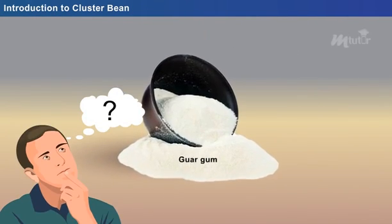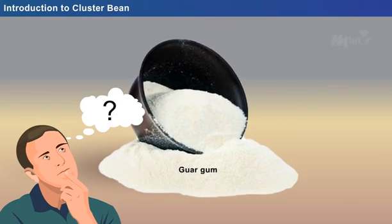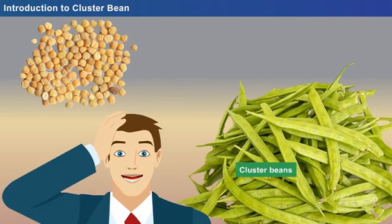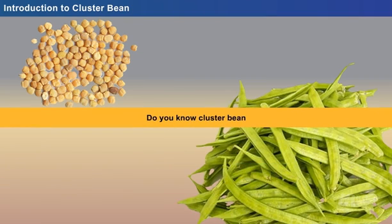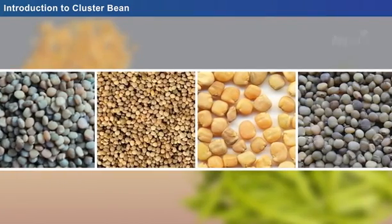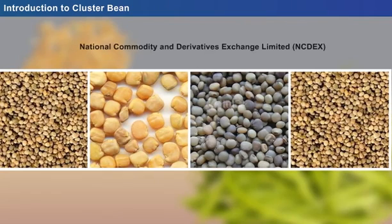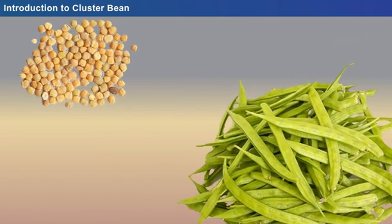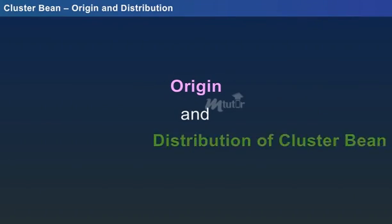Wondering what is this Guar Gum and from where it is obtained? Guar Gum is obtained from the seeds of cluster beans. Cluster bean, otherwise known as Guar, is an important commercial crop listed on the National Commodity and Derivatives Exchange Limited — that is NCDEX. There are several other economic benefits of cluster bean which are sure to surprise you. In this lesson, we shall be discussing the origin and distribution of cluster bean, followed by its economic importance.